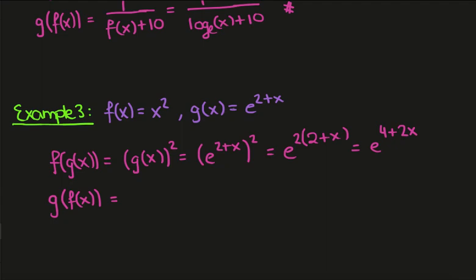That's simply replacing every x in the definition of g with an f of x so I've got e to the 2 plus f of x, which is just e to the 2 plus x squared.